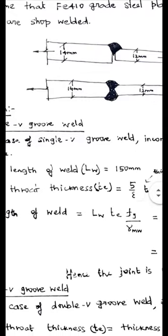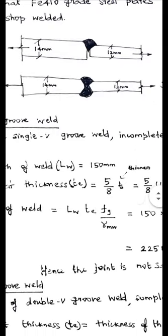The effective length of the weld is directly given in the problem as 150 mm, that is, the LW is directly given.